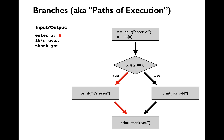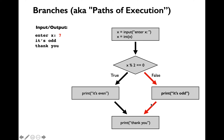Let's learn the term branch of execution or path of execution. I have an input here which is 8. When I enter 8 as the input for x, we'll be going through the conditional execution path, otherwise known as branch of execution or path of execution. When I provide the input as 7, we'll be going through another branch or path of execution which will take us through the alternate execution.